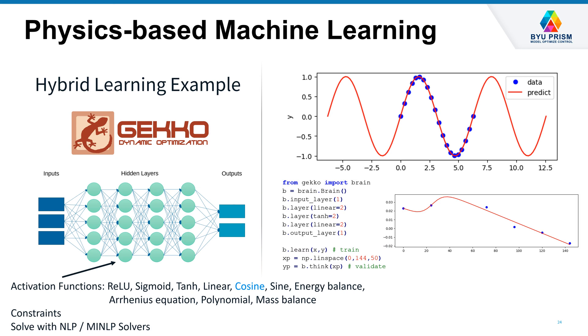So we're working on this physics-based machine learning. This is just an example using a Gecko brain. So more work will be coming on this where we can use different types of activation functions to be able to express physics-based solutions.